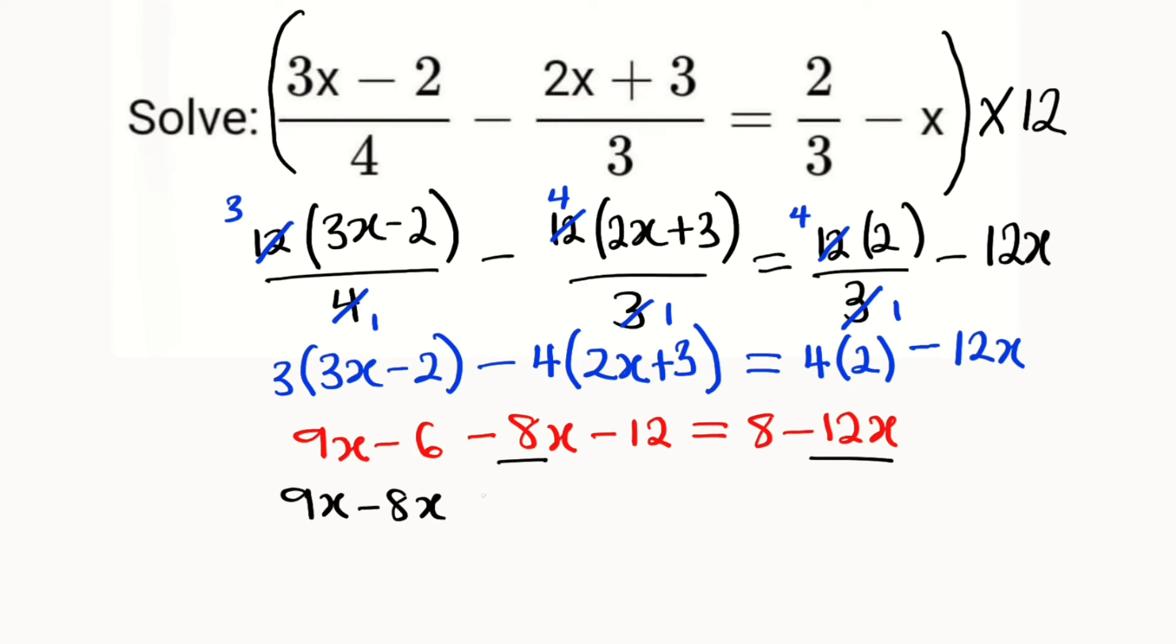Moving terms across: negative 12x crosses over and becomes positive 12x. Taking negative 6 over, it becomes positive 6. Taking negative 12 over, it becomes positive 12 as well.